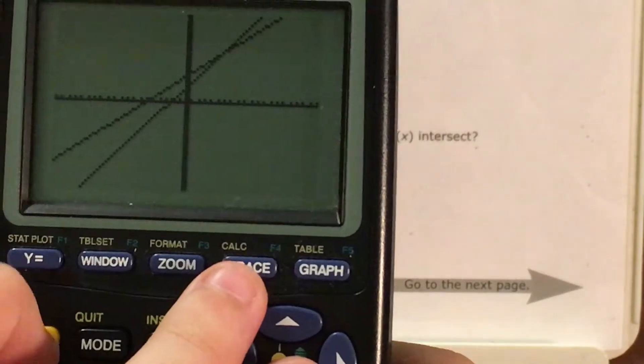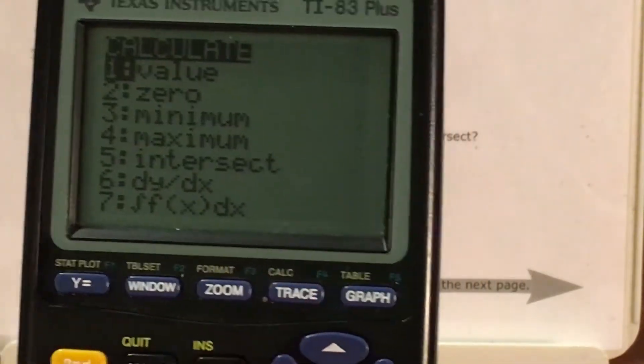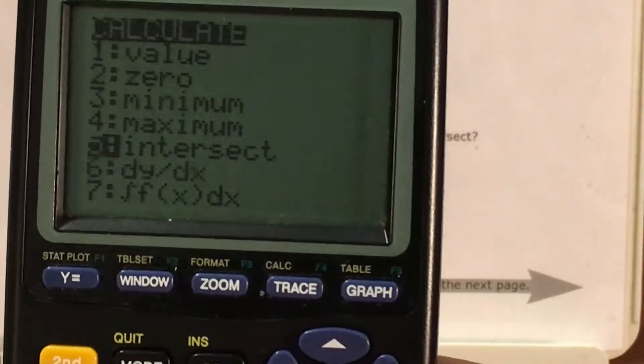I see calc above my trace button. I press second and calc or second and trace. I go down until I find intersect.